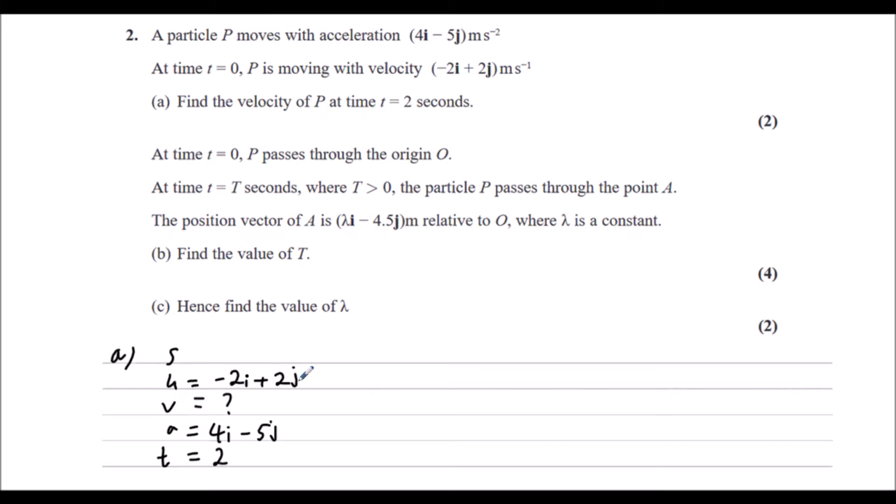We can use v equals u plus at. So v equals u plus at. So v is u, which is minus 2i plus 2j plus a times t. So that's 4i minus 5j times 2, or 2 times 4i minus 5j.